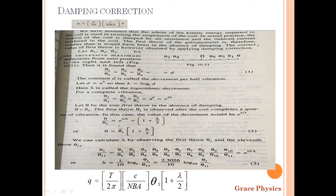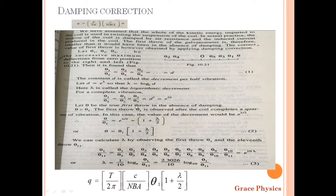Theta1 is what we actually measure. Theta is the ideal (undamped) deflection — we do not directly observe it. The expression theta = theta1 × (1 + λ/2) gives us the corrected value. To determine lambda experimentally, we use the ratio theta1/theta3 = e^(2λ). More practically, we use theta1 by theta11, which equals e raised to 10λ.